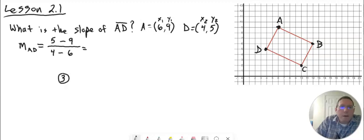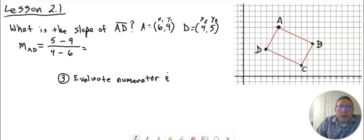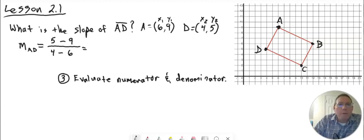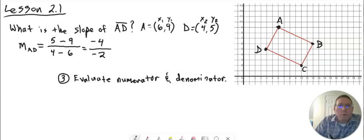Step 3 is to evaluate — that means subtract. Evaluate the numerator and the denominator. To evaluate means to do your operations — addition, subtraction, multiplication, division. So to evaluate the numerator means to do 5 minus 9, which is negative 4. And we evaluate the denominator: 4 minus 6, that's negative 2. That's step 3.